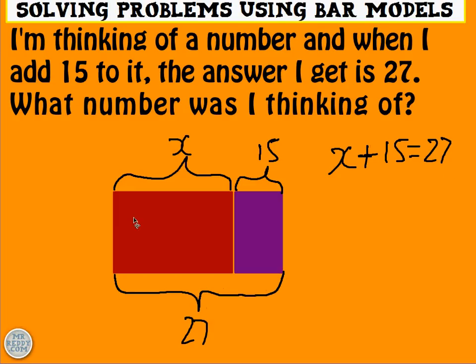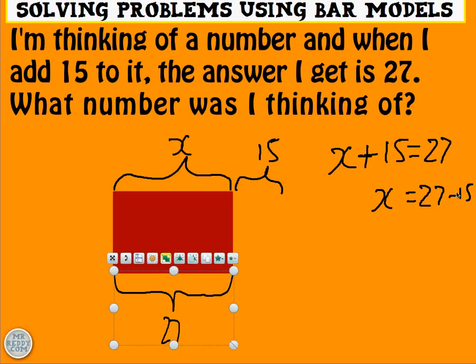What I hope the bar model does is show you that the two of these together will make 27. So if I take one of them away, if I take the 15 away, I'm left with this bit here which is x. So I've taken away 15 and I'm left with x. In other words, x is 27 take away 15. So that bit is 27 take away 15 now and therefore x equals 12.